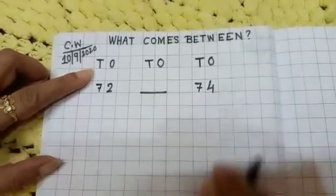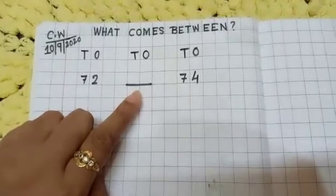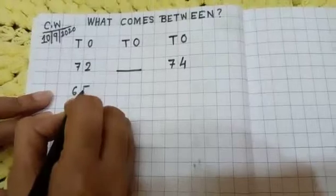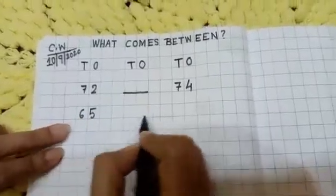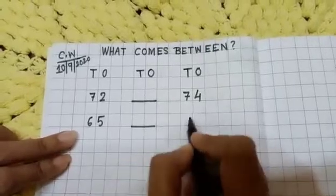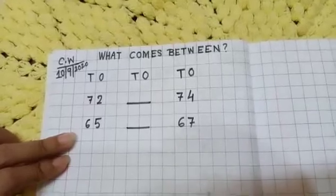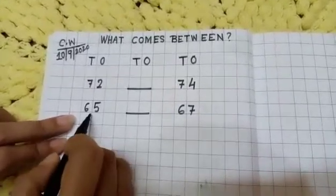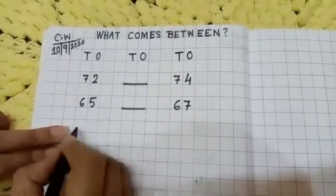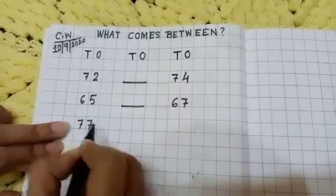Next, write: sixty-five dash sixty-seven.